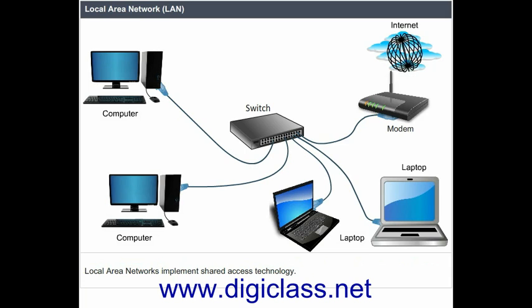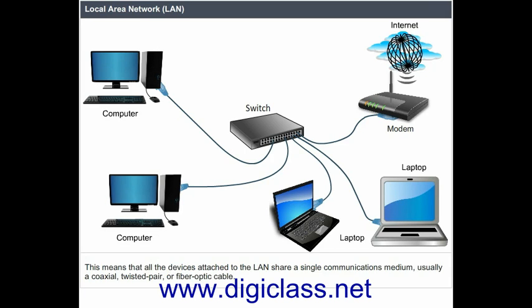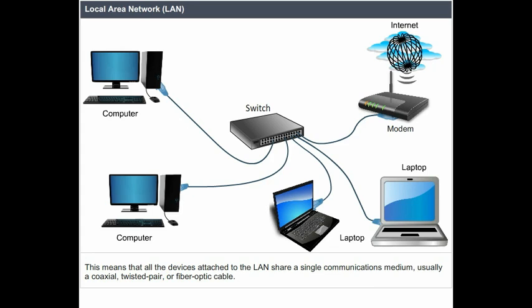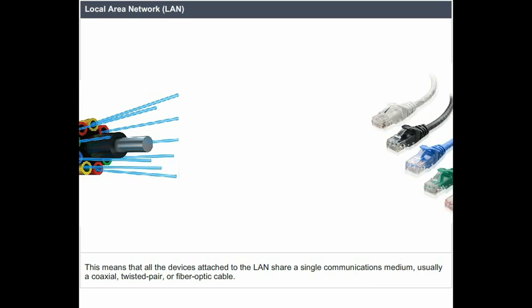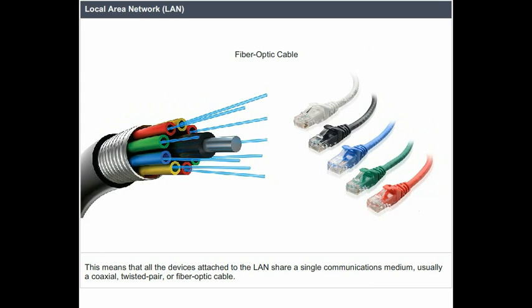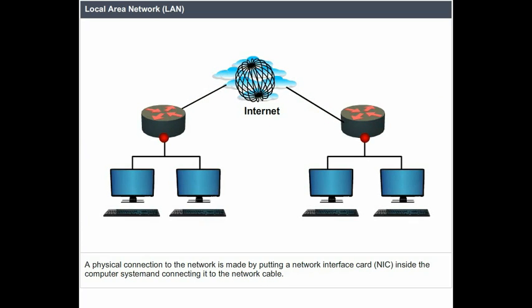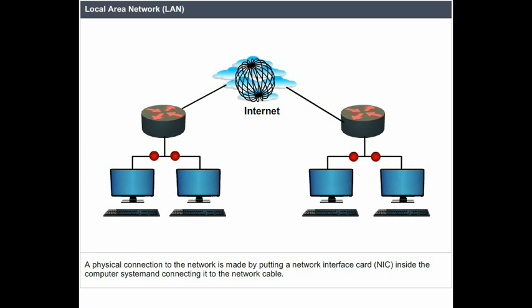Local Area Networks implement shared access technology. This means that all the devices attached to the LAN share a single communications medium, usually a coaxial, twisted pair, or fiber optic cable. A physical connection to the network is made by putting a network interface card inside the computer system and connecting it to the network cable.